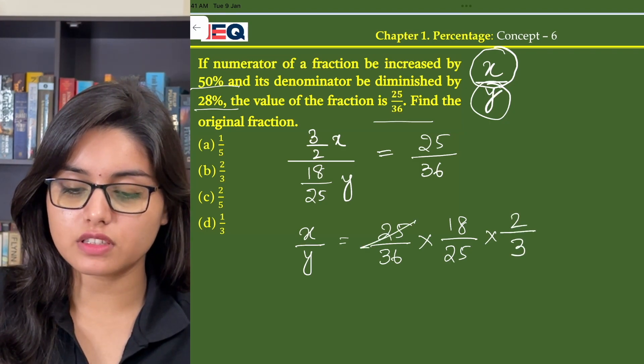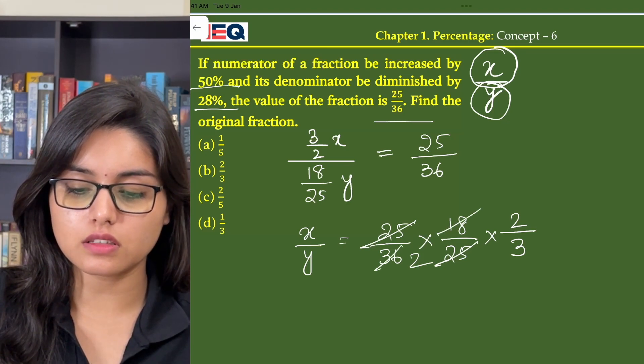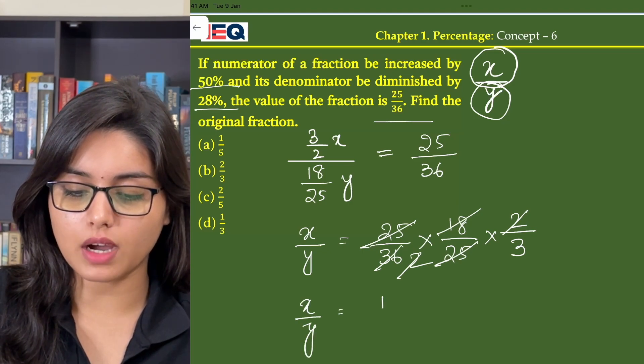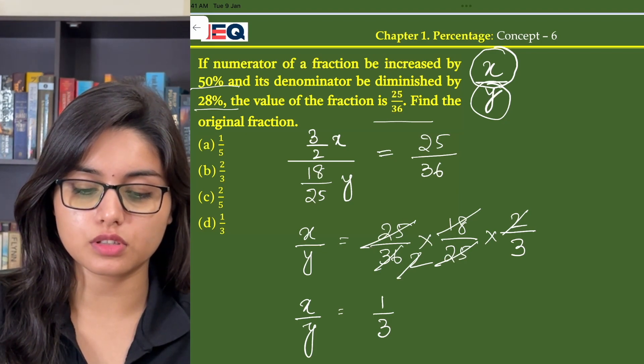Now, on dividing we see, 25 gets cancelled, 18 to 36, 2 gets cancelled. So, x by y is equal to 1 by 3. And so, the answer to this question is option D.